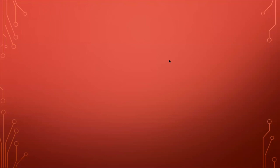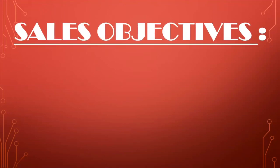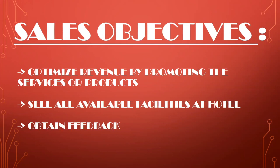Now let's discuss the objectives of sales. The primary objective is to optimize revenue and to sell all available facilities in the hotel — be it the health club, the salon, or all food and beverage outlets. A third objective is to obtain guest feedback so that corrective actions can be taken if a guest is not satisfied with any of the services.